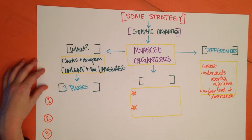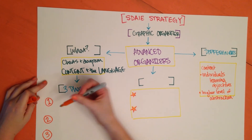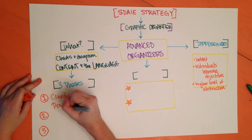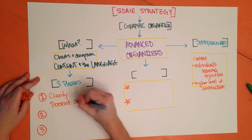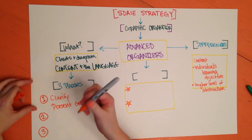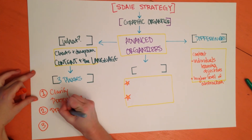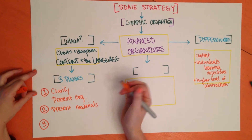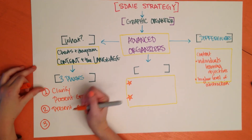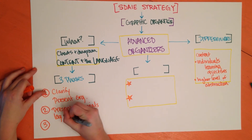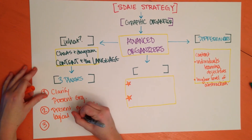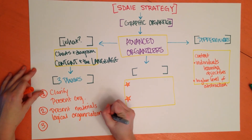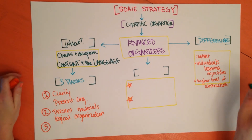The first phase is to clarify the learning objectives and present the organizer to the student. The second phase is to present the new materials, making sure to present them in a logical organization or logical progression so that the student can see how this material is related to their previous experience.